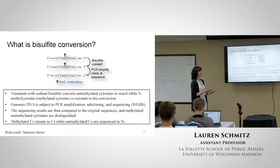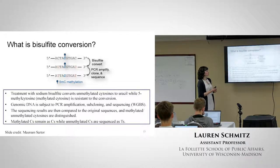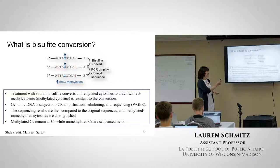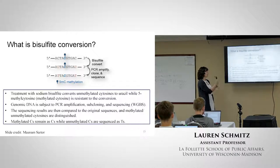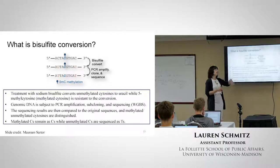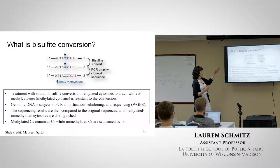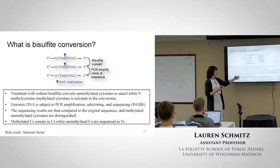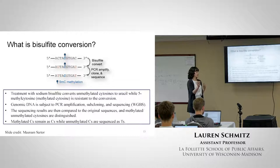I mentioned bisulfate conversion - what is that? The data are treated with sodium bisulfate, which converts unmethylated cytosines to uracil, while 5-methylcytosine is resistant to the conversion and stays a C. Then the genomic data is subject to PCR amplification - you amplify the DNA, clone it, and sequence it. The methylated C's remain as C's, while the unmethylated C's are sequenced as T's. That's how you know whether or not the CpG site was methylated.